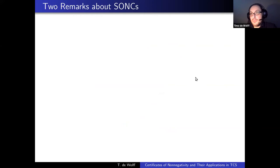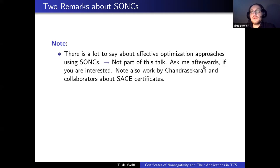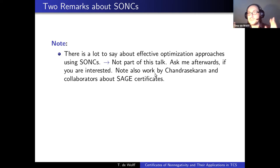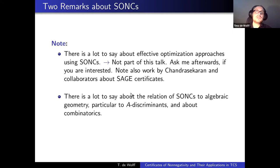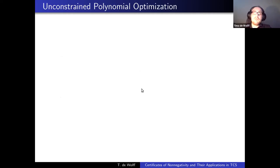Two quick remarks before moving to applications. First, there is a lot to say about effective optimization approaches using SONC — also, Venkat Chandrasekaran and collaborators independently introduced 'SAGE certificates' around the same time, and nowadays we know SONC equals SAGE. There is a lot of work especially from the optimization side. Second, there's also a lot to say about the relation of SONC to algebraic geometry — particularly to A-discriminants — and to combinatorics. Feel free to ask me about these afterwards.